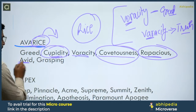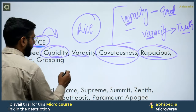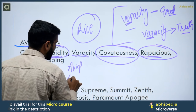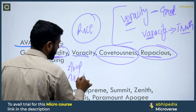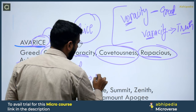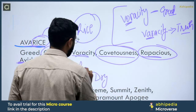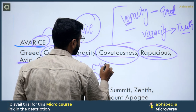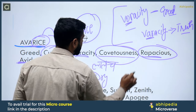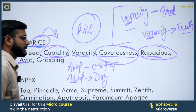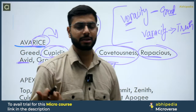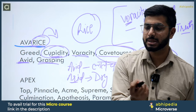The next word is Avid. Note the difference: Avid and Arid. Arid means Dry. But Avid means having a greed or eagerness to grasp everything — हर चीज़ को Grasp करने का लालच. So Avid means eager or desirous.